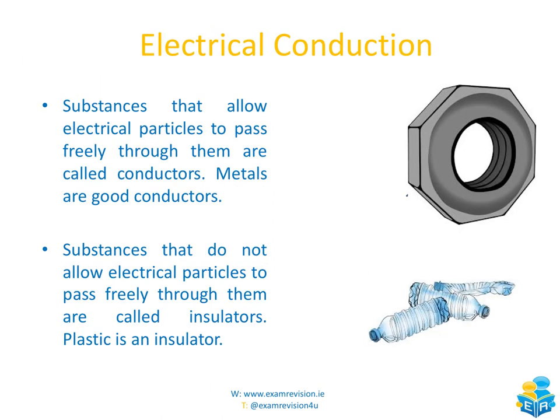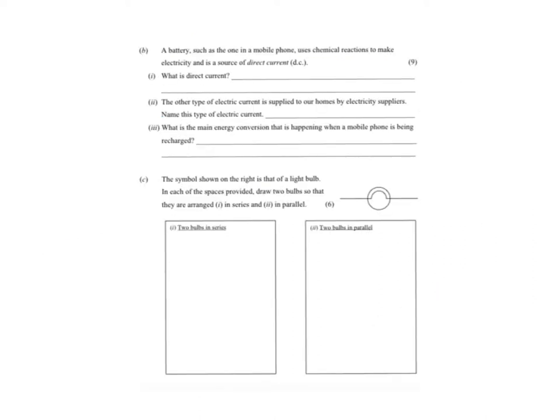Substances that allow electrical particles to pass freely through them are called conductors — metal is a good example. Substances that don't allow electrical particles to pass freely through them are called insulators — plastic is a really good example of an insulator. We're now going to look at an exam question summarizing everything we've covered so far.